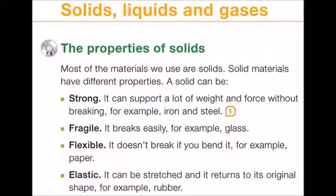Fragile — it breaks easily. For example, glass. Flexible — it doesn't break if you bend it. For example, paper.